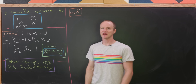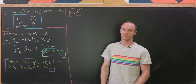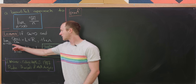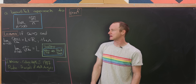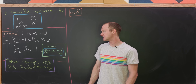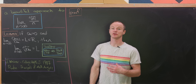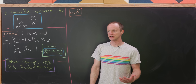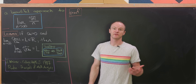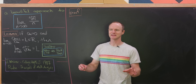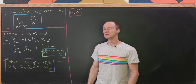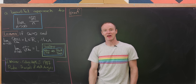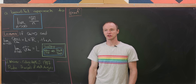So if we've got a sequence of positive real numbers — call them a sub n — and furthermore the limit as n goes to infinity of a sub n+1 over a sub n is equal to L, which is a real number, meaning this converges and does not diverge to infinity, then the limit as n goes to infinity of the nth root of a sub n is also equal to L.